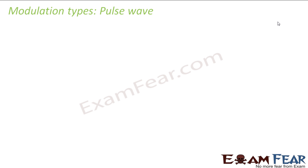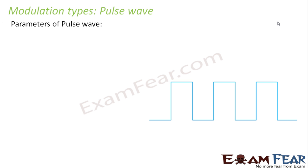So let us look at the different types of modulation which are possible in a pulse wave. Now, what are the different parameters of a pulse wave? Because the type of modulation which would be possible will actually depend on the parameters.